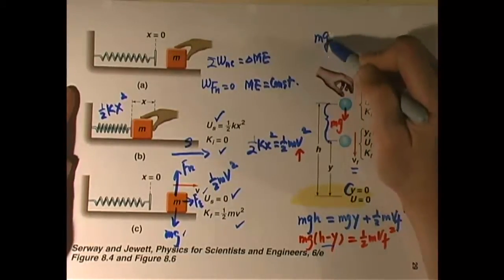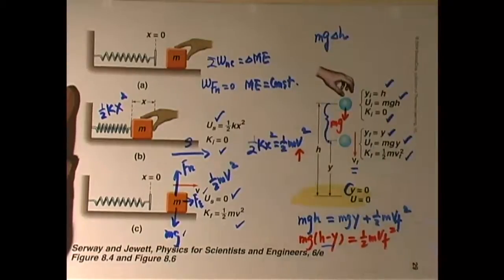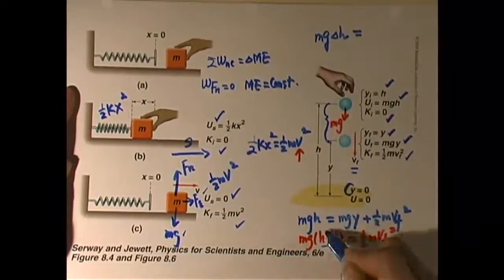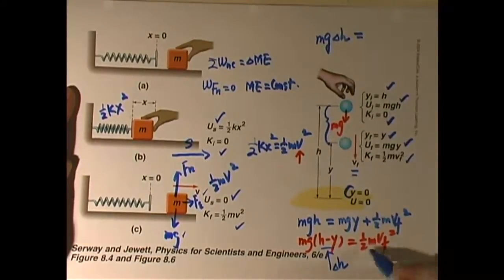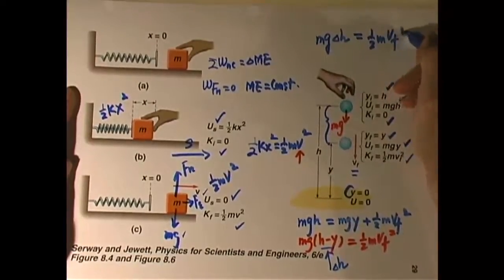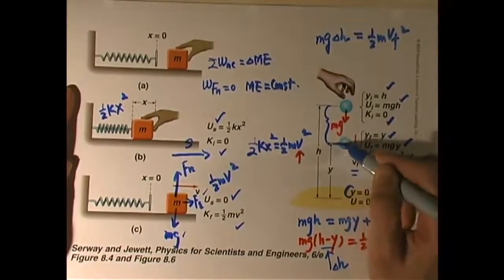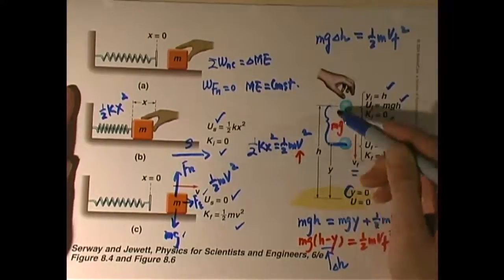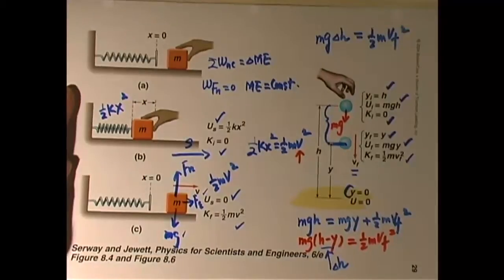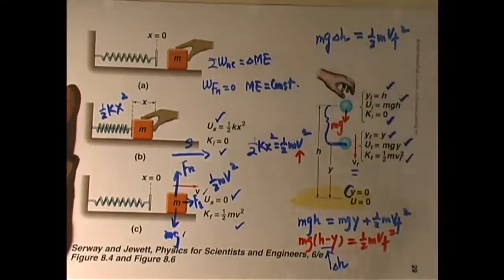Moving mgy to the left gives mg(h minus y), which is mg·delta-h — the change of gravitational potential energy. The ball loses gravitational potential energy as it lowers its position, and that energy goes to kinetic energy. It doesn't matter where you define h equals zero; as long as the change of height is the same for this event, the result gives the same final velocity.